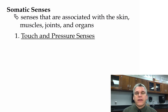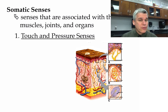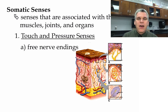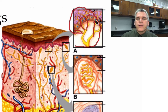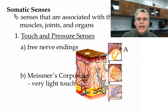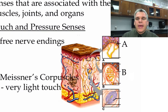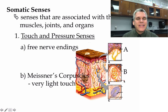We have mechanoreceptors — starting with the touch and pressure senses. Here we see a cross-section of the skin. You can see the epidermis, the dermis, and the subcutaneous layer. In the top of the dermis going into the epidermis are free nerve endings, labeled A. These nerves extend into the bottom of the epidermis and can serve a variety of functions — pressure or temperature. The second type are the Meissner corpuscles, labeled B, found at the very top of the dermis. These are rounded in shape and detect very light touch, positioned close to the surface for that purpose.